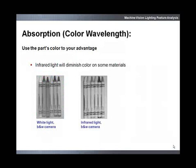Infrared light has a tendency to diminish color features in some materials. In this example, the effects of white light and infrared light are demonstrated using a black and white camera. On the picture on the left, with white light, you can see the various color shades as they appear. In the example on the right, infrared light causes all of the paper on the labels of the crayons to look white.